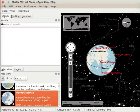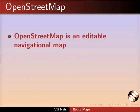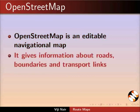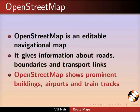Let us first learn about OpenStreetMap. OpenStreetMap is an editable navigational map. It gives information about roads, boundaries, and transport links. OpenStreetMap also shows prominent buildings, airports, and train tracks.